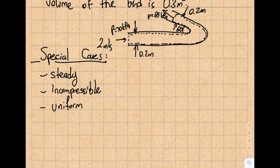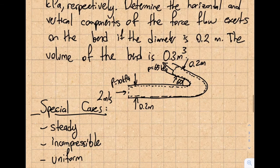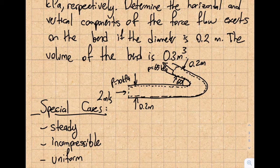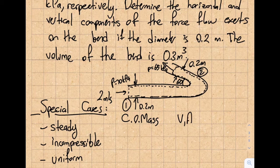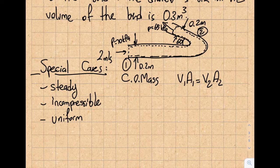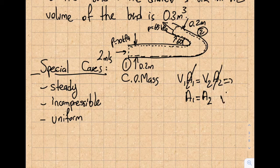Next, establish which basic principles to use. I'm given the inlet velocity. Let me find the exit velocity. With these three assumptions, V₁A₁ = V₂A₂. Since A₁ = A₂ (constant diameter pipe), this simplifies to V₁ = V₂ = 2 m/s.